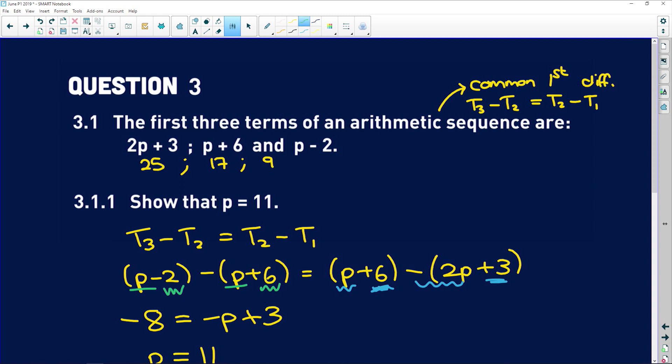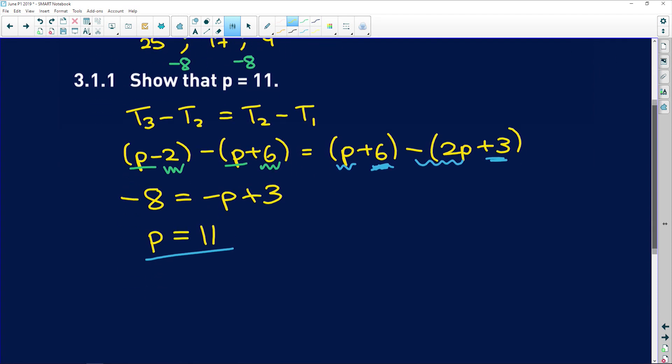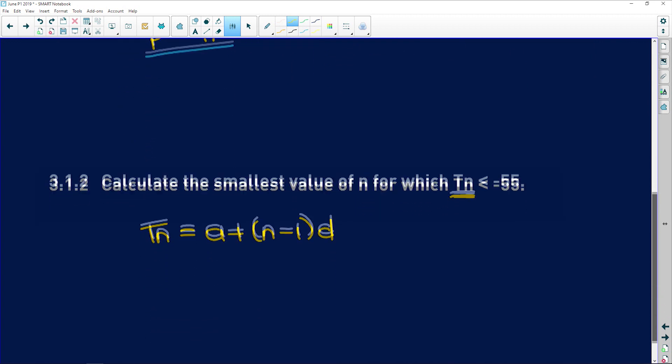If I look at the first differences, 17 minus 25 is negative 8, and 9 minus 17 is negative 8. So we know that a is 25 and d is negative 8.